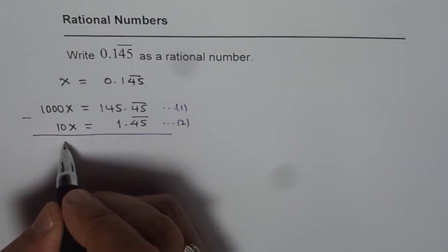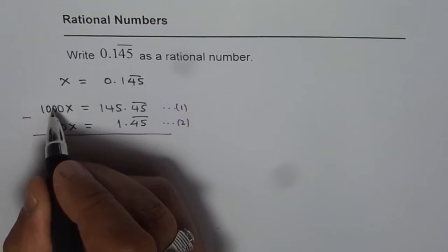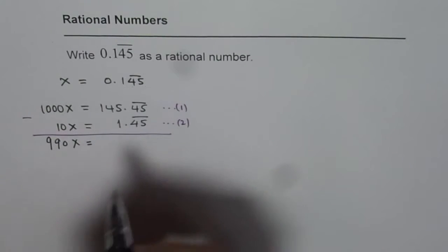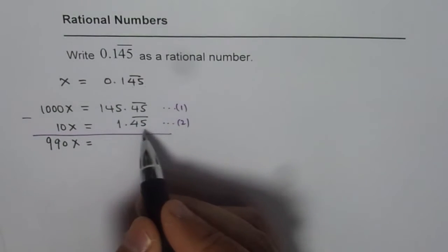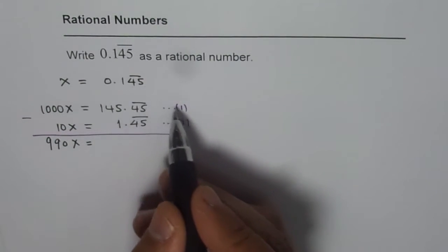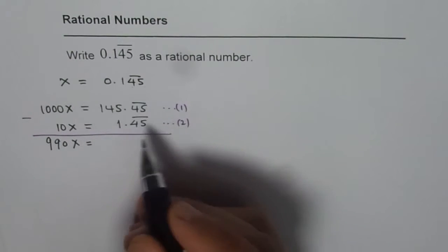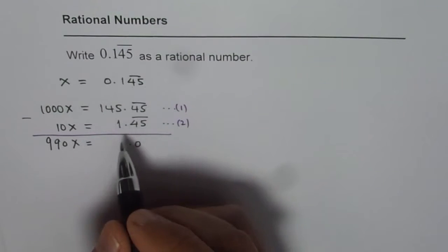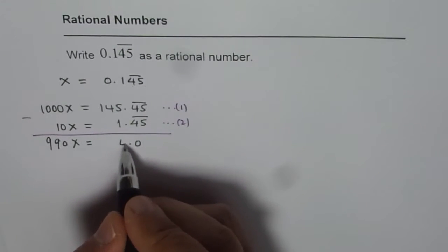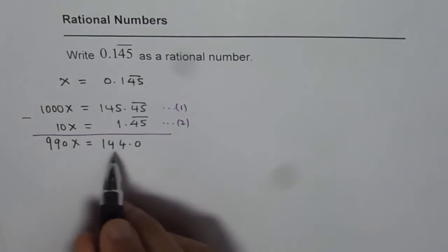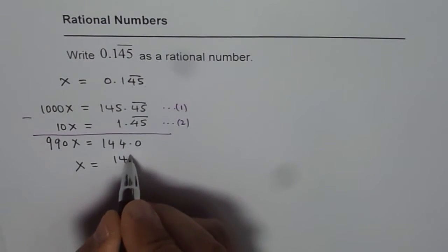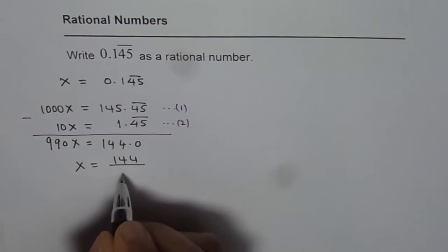So if you take away 10 from 1000 you get 990. 990x equals, anything after decimal becomes 0. It is 45, 45, 45 all cancel out. So after decimal we get 0. That is the strategy. 5 take away 1 is 4 and we have 144.0. That gives us x equals 144 divided by 990.